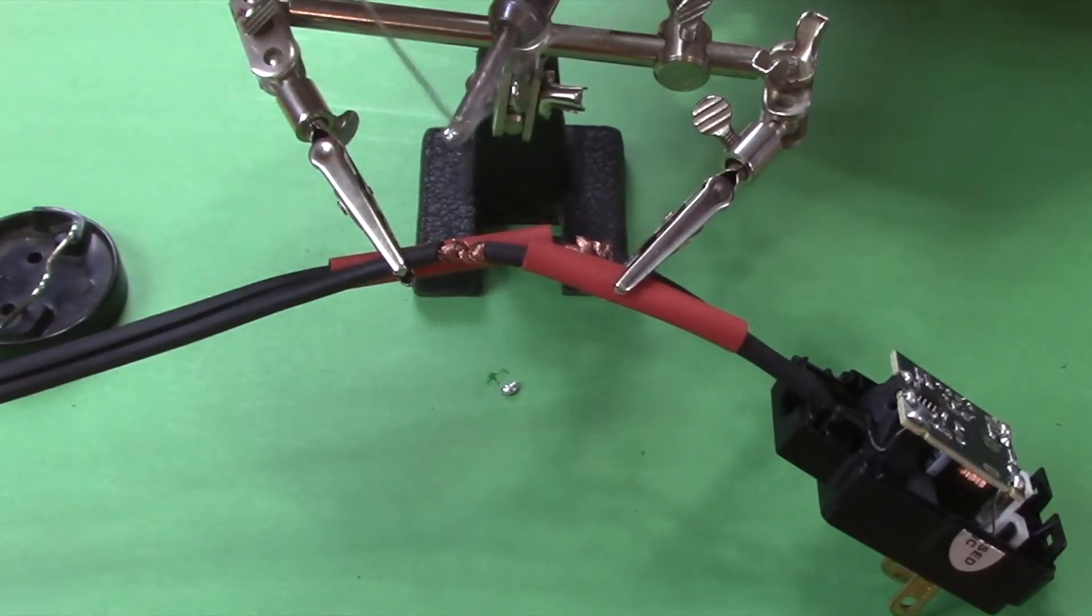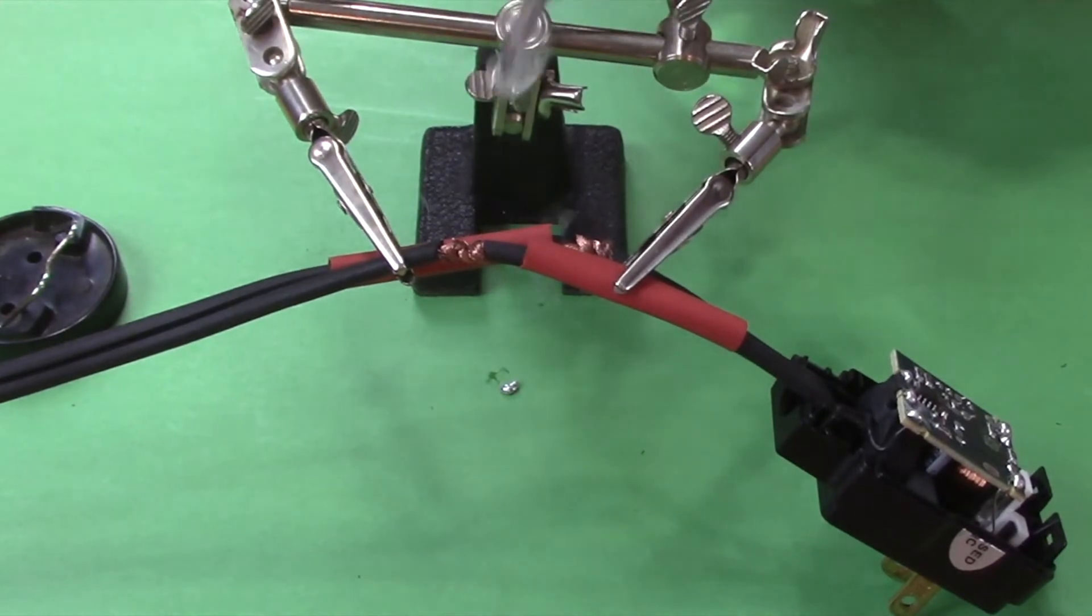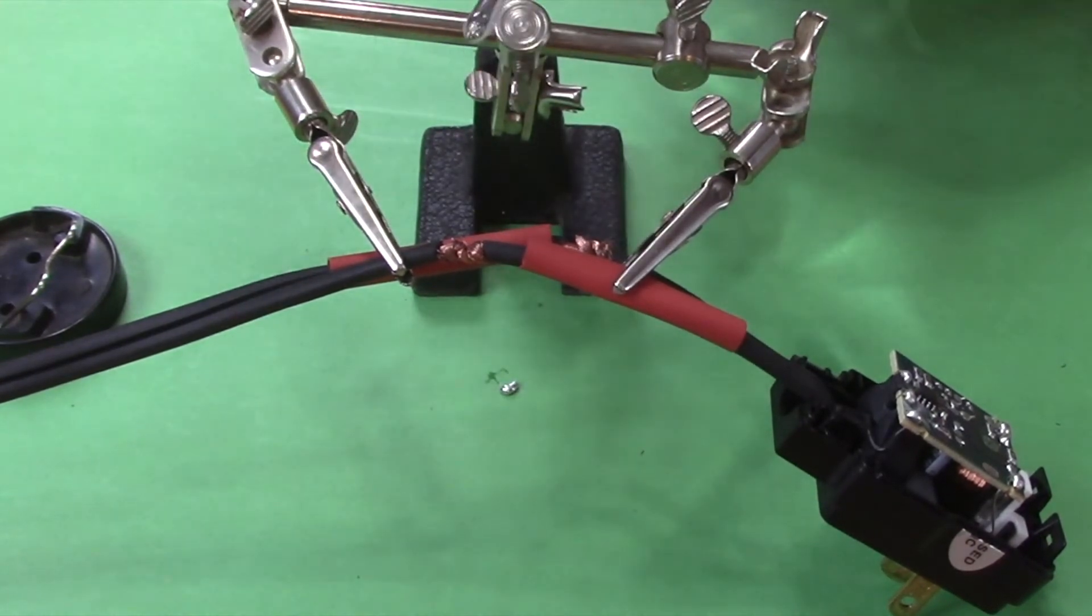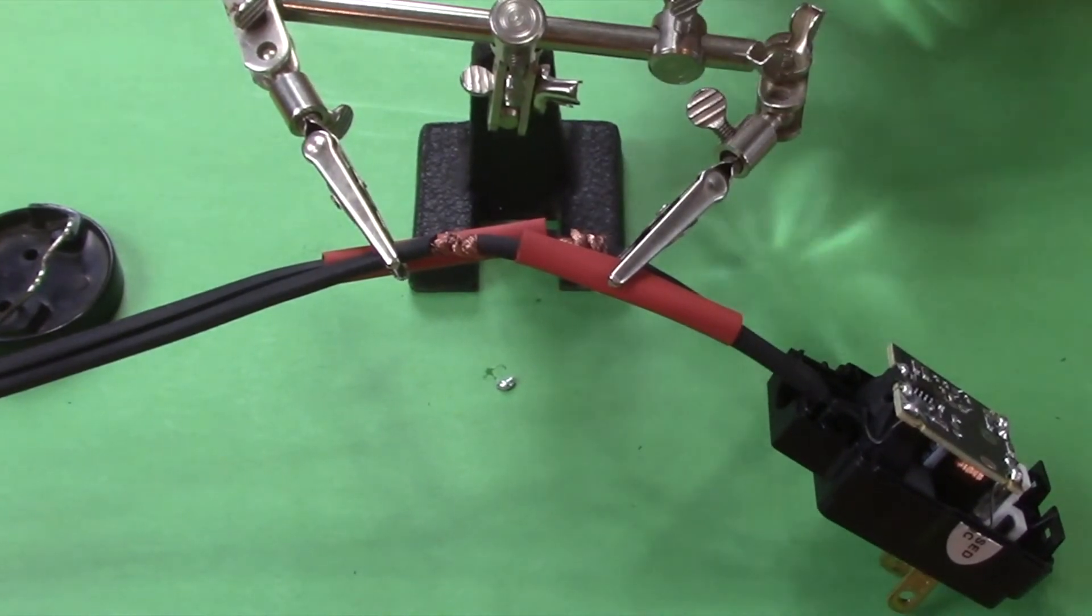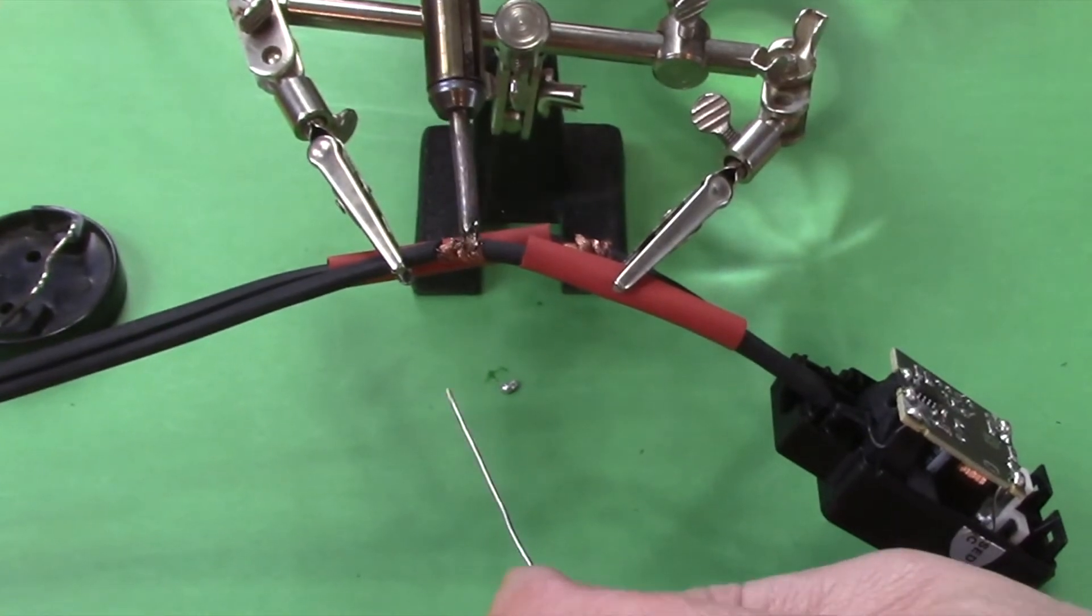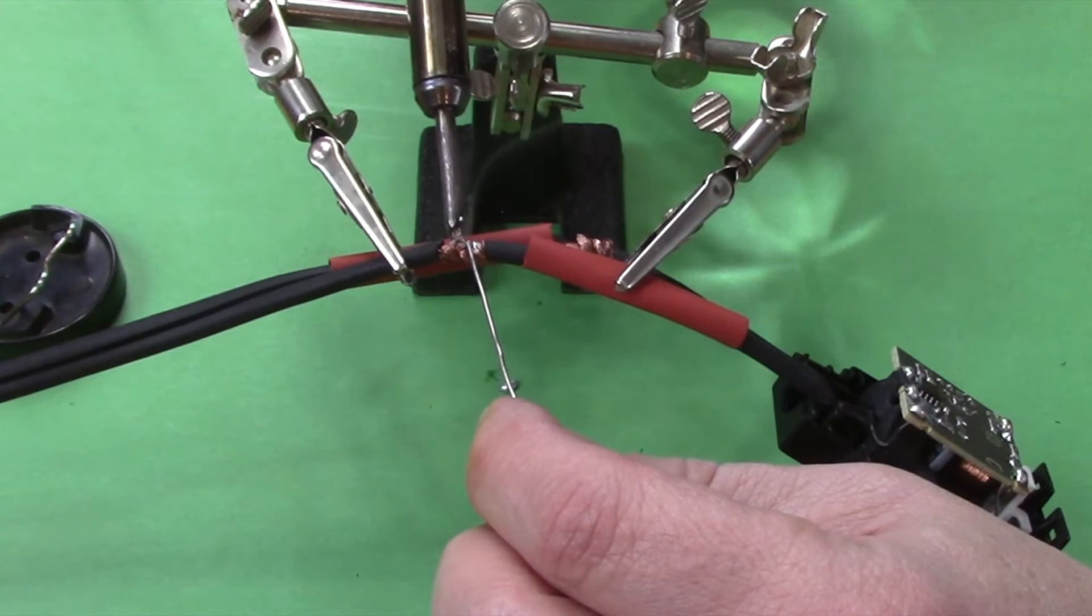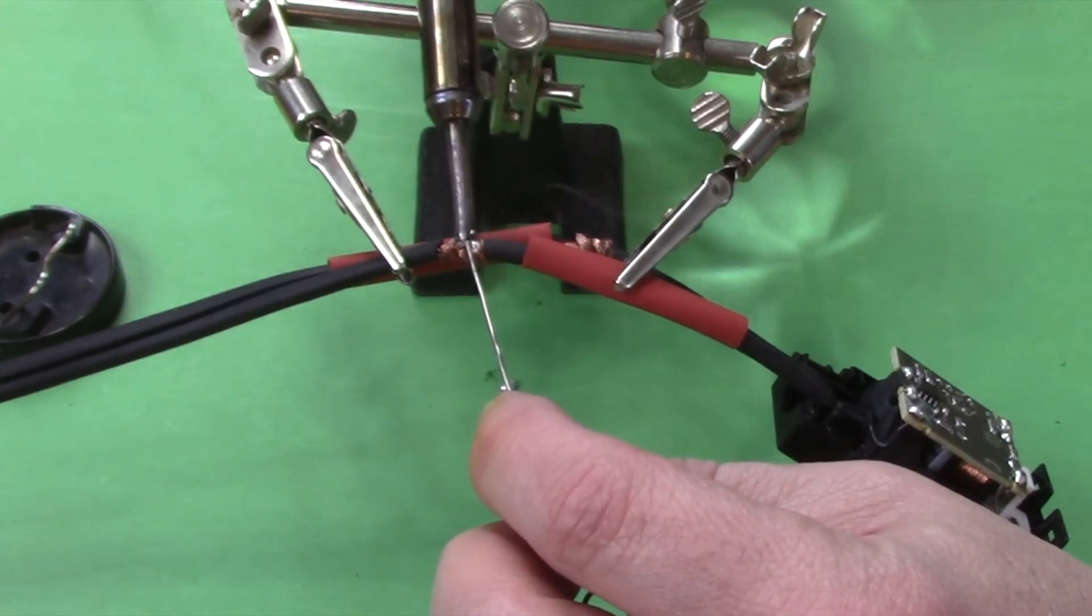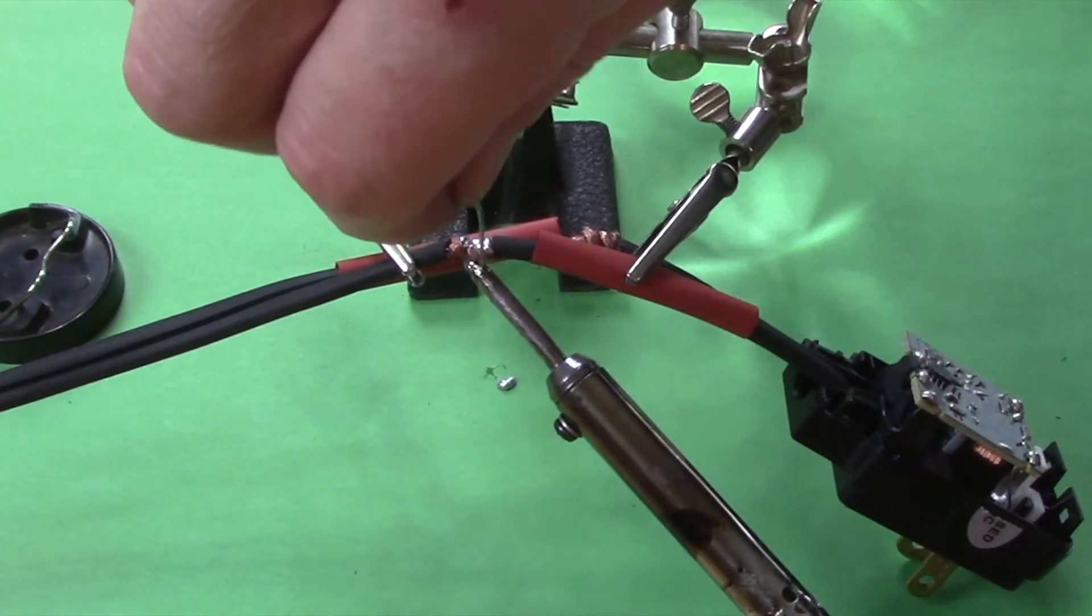I'm going to get a little solder on the tip of the tool. Sometimes you might have to clean this with a screwdriver or a piece of sandpaper. And now we just need to heat up our wire and get our solder on there. You don't need a lot. A little bit goes a long way.